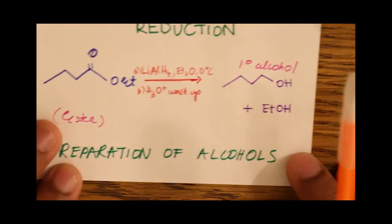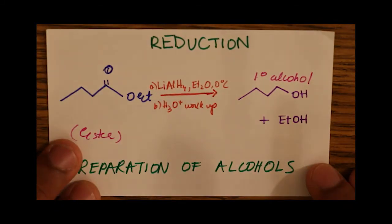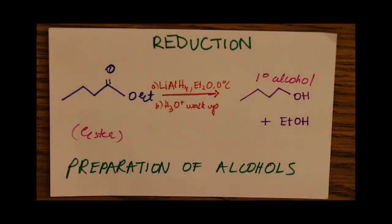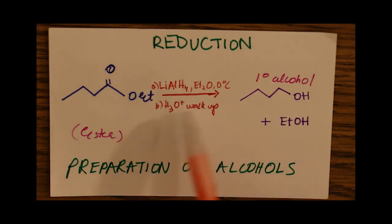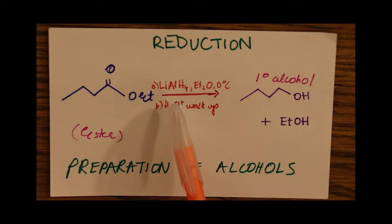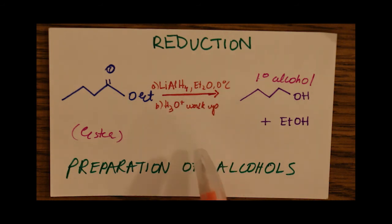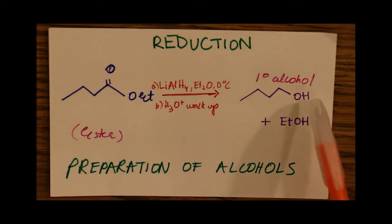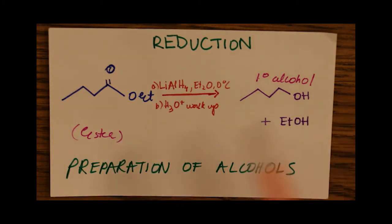The next reduction reaction in the preparation of alcohols uses an ester. Again, we use the very strong reducing agent lithium aluminum hydride, along with ethanol and an acid workup. But this time an ester yields us a primary alcohol — ester to primary alcohol.